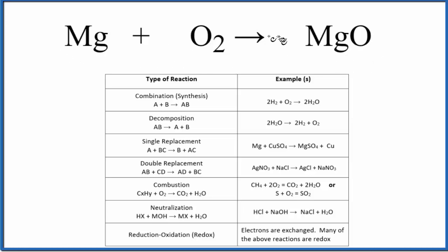First, we should probably balance it though. We have two oxygens here, let's put a two here. So now we have two oxygens, but we have two magnesiums. Put a two here. So that's the balanced equation.